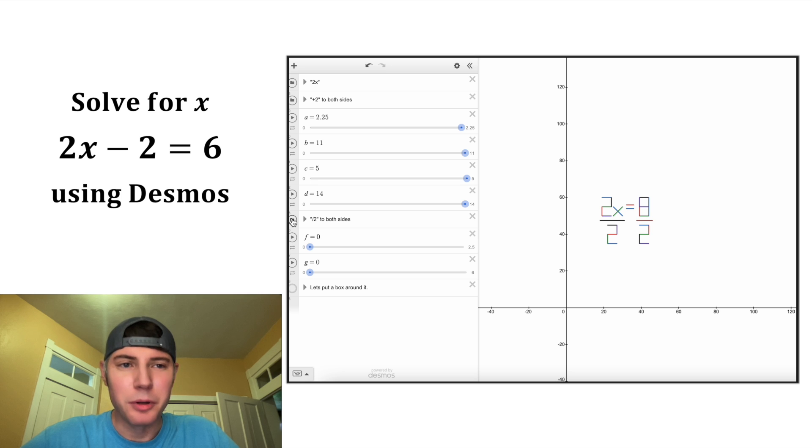For the next step, let's divide both sides by 2. On the left-hand side, this 2 and this 2 are going to cancel each other out. And on the right-hand side, 8 divided by 2 is equal to 4.